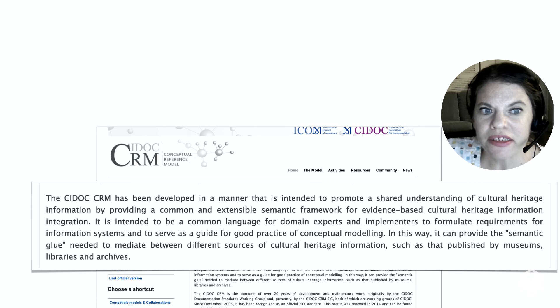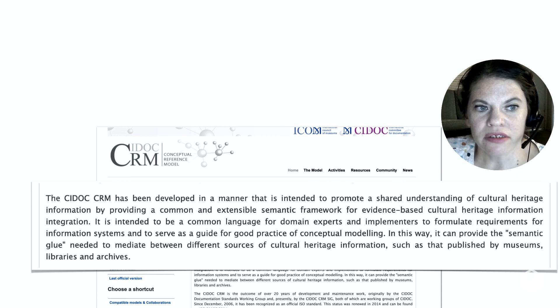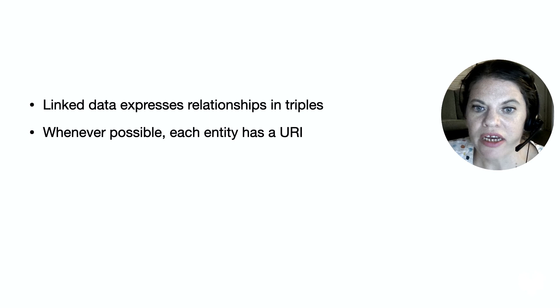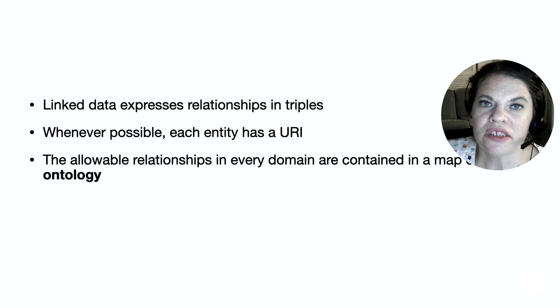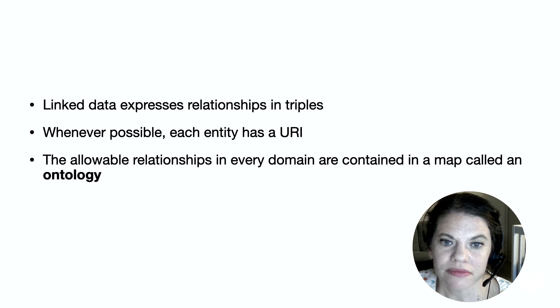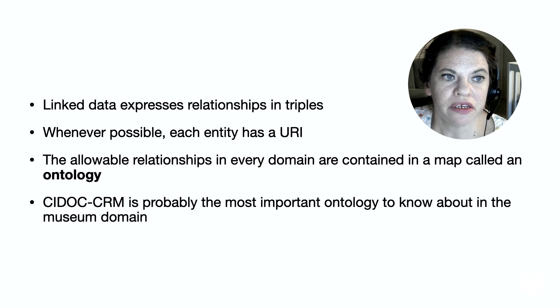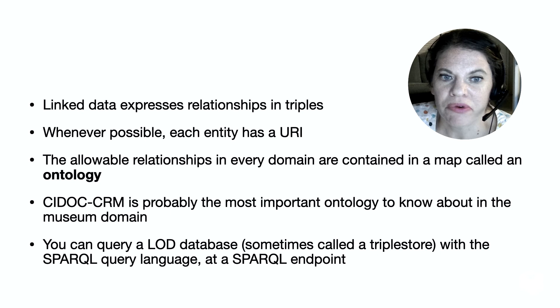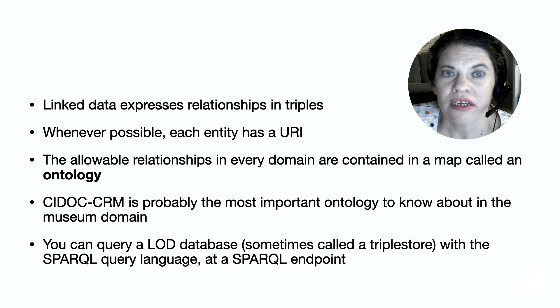So now you can relax a little bit because I've covered the main stuff you need to know about linked data. Here are the takeaway points: linked data expresses relationships in triples; whenever possible, every entity is going to have a URI; the allowable relationships in every domain are contained in a map called an ontology; CIDOC CRM is probably the most important ontology to know about in the museum domain; and you can query a linked open database — sometimes called a triple store — using SPARQL query language at a SPARQL endpoint. If you understand all of those statements, you should be good to go and able to follow most conversations about linked data.